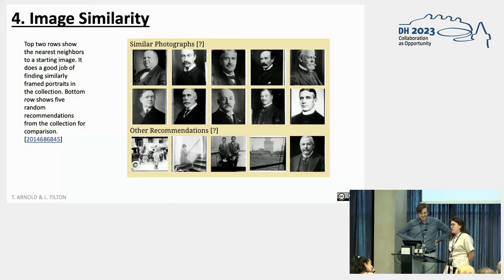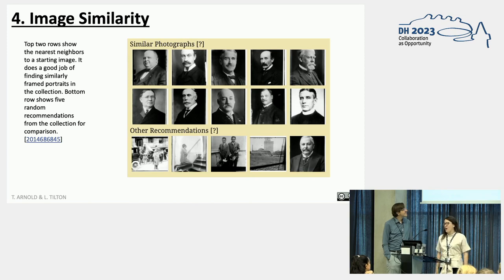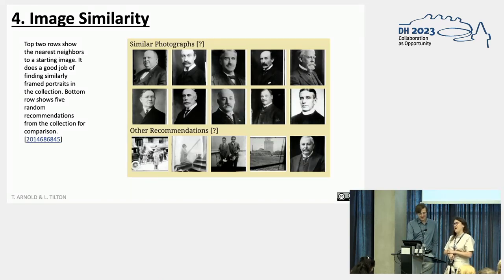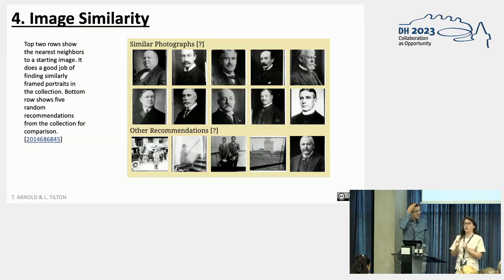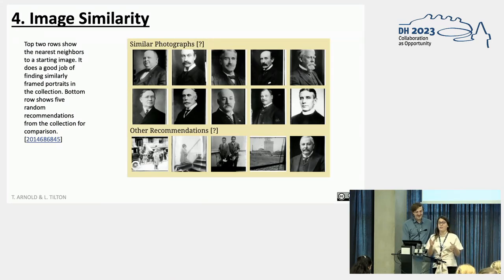We looked at image similarity to see which images are alike, thinking about tropes and genres within the collection — for example, sets of important men in portraiture looking one way or the other. We also tried to pay attention to where image similarity was picking up on topics or areas we would not want put in conversation, thinking about recent controversies in computer vision — for instance, Google Arts and Culture got into some issues with image similarity. This collection was so tight that we had to create a way for users to get out of the portraiture loop.